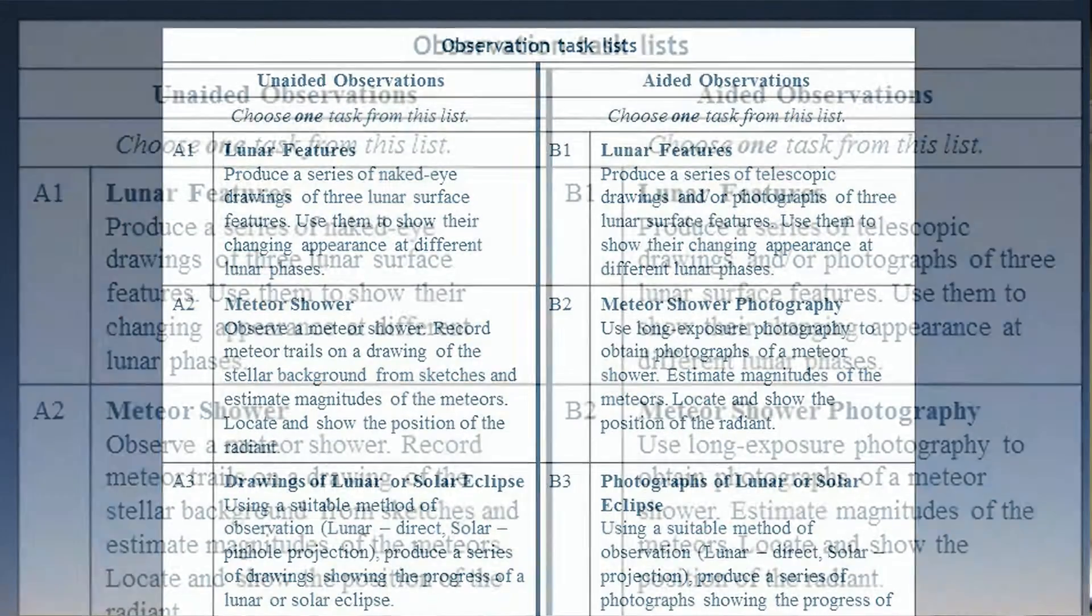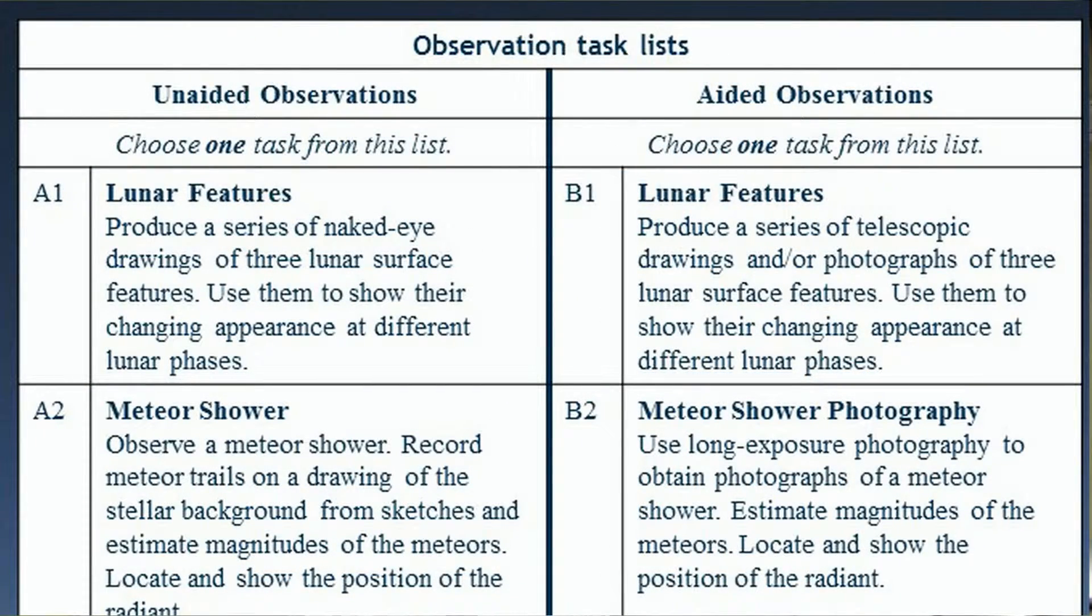If you look at Project A1, and then Project B1, you can see A1 is about drawing lunar features. So picking features on the moon, particular craters or whatever, and saying, I'm going to look at that crater at full moon, quarter moon, crescent moon, and record how it changes its appearance.